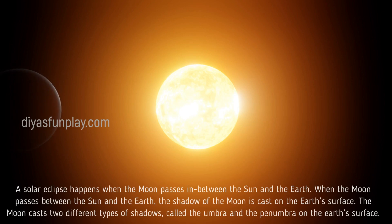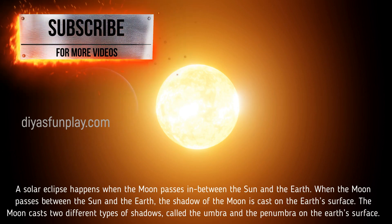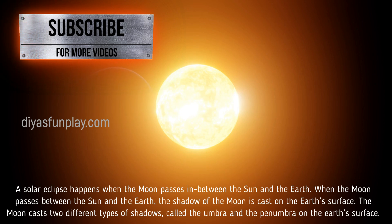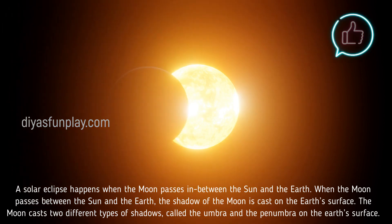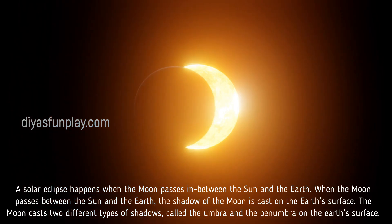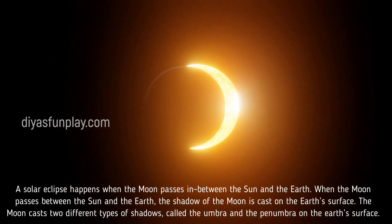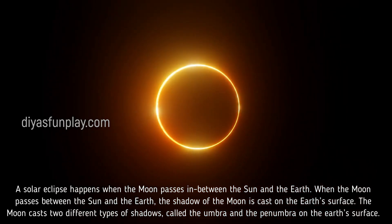A solar eclipse happens when the moon passes in between the Sun and the Earth. When the moon passes between the Sun and the Earth, the shadow of the moon is cast on the Earth's surface.